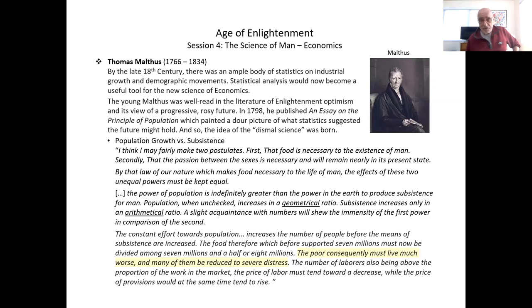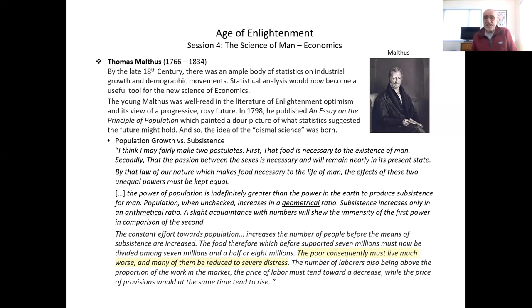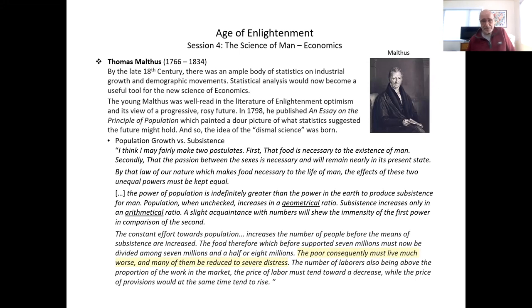The constant effort toward population growth increases the number of people before the means of subsistence are increased. Malthus says: first more people get produced, and then the response is to increase food — but we won't increase food production before that population expansion, because that would drive down prices and farmers only produce for demand. 'The food which before supported 7 million must now be divided among 7 million and a half or 8 million. The poor consequently must live much worse, and many be reduced to severe distress.' Before a response to population growth occurs, this imbalance drives some number of people to the wall.